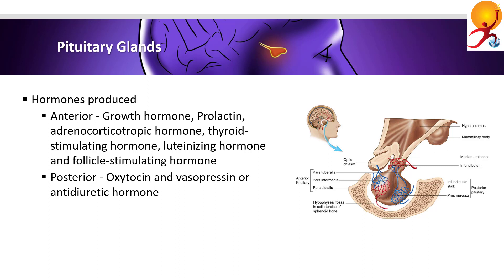Growth hormone acts on bones, cartilage, and muscle to promote the growth of these tissues during childhood. Growth hormone secretion deficiencies may lead to dwarfism, while excessive production of growth hormone in children may cause exaggerated bone growth and gigantism. Prolactin stimulates the production and secretion of milk by mammary glands in women.